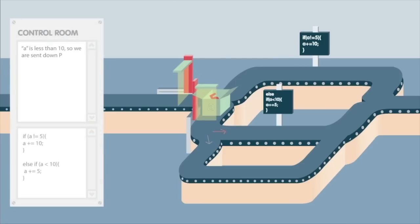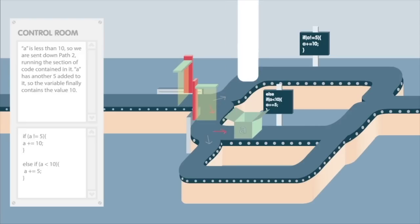A is less than 10, so we are sent down path 2, running the section of code contained in it. A has another 5 added to it, so the variable finally contains the value 10.